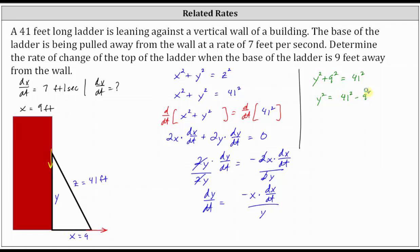or we can say Y is equal to the square root of the difference of 41 squared and nine squared, giving us Y equals 40.